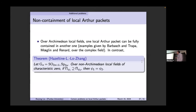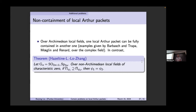A further question: L-packets are known to be disjoint, but Arthur packets can overlap. Can they contain each other? In the archimedean case they can — examples are given by Barbasch-Trapa and McGlan-Arana. However, over p-adic fields, joint with Hasegawa, Law, and Jiang, we show this does not happen — they don't contain each other. In other words, in a p-adic packet there is only one way to get a stable distribution compatible with endoscopy theory, which is just the Arthur packet itself. However, we don't know how many ways there are to get a stable distribution if we don't require compatibility with endoscopy lifting.